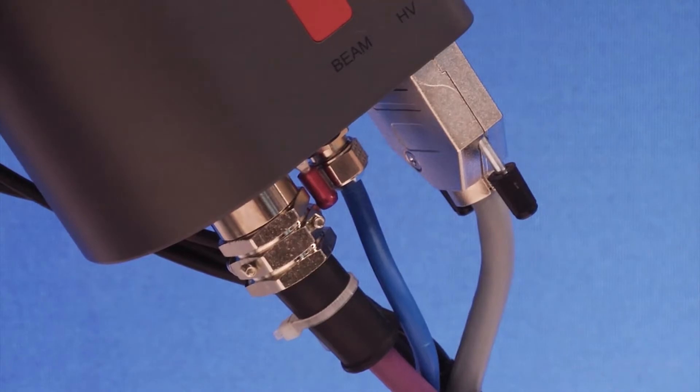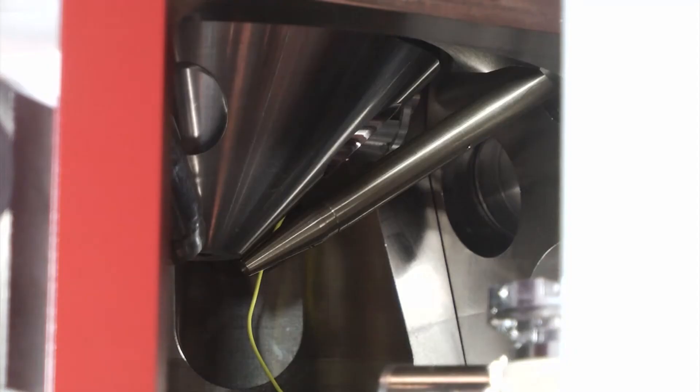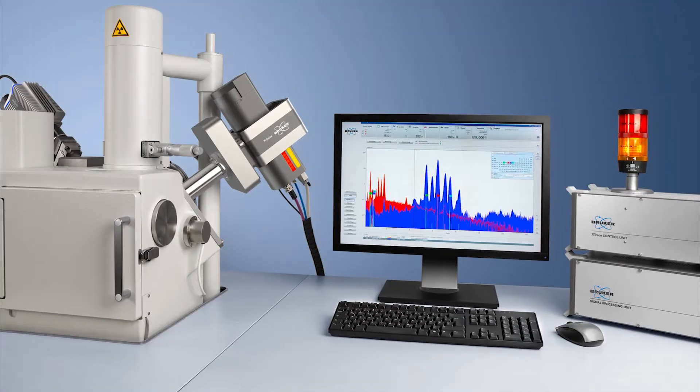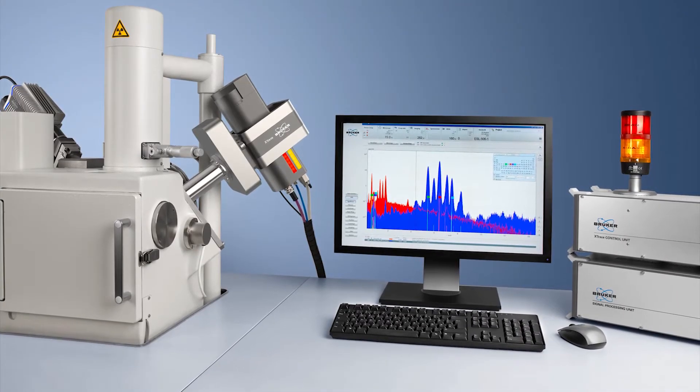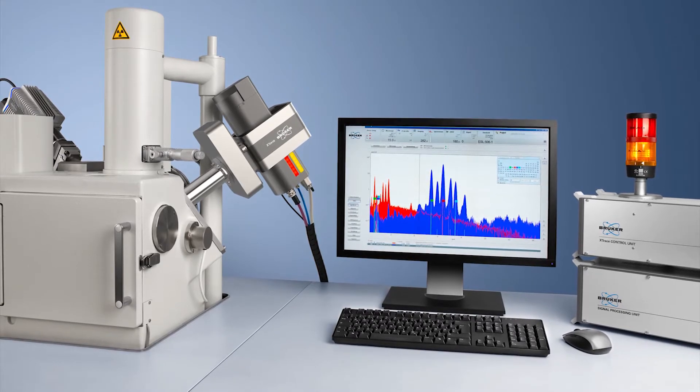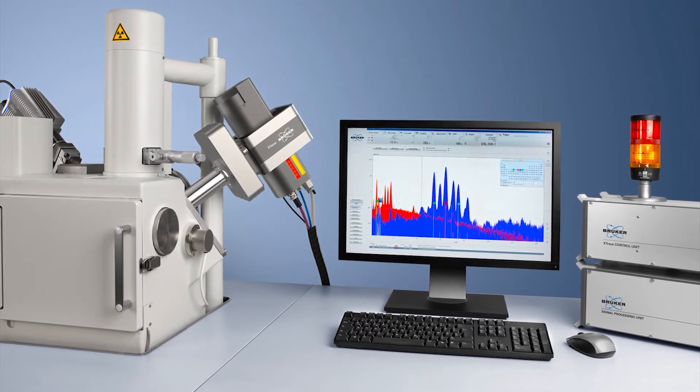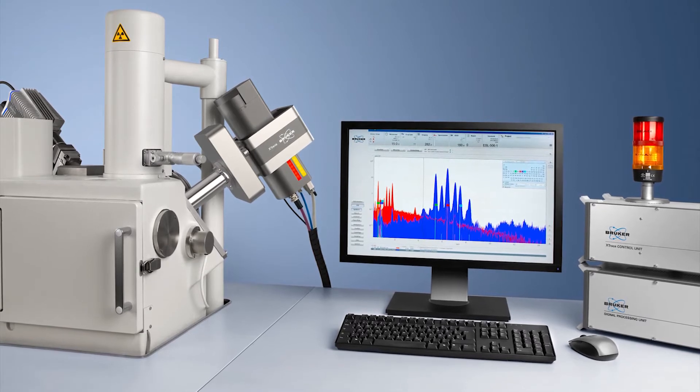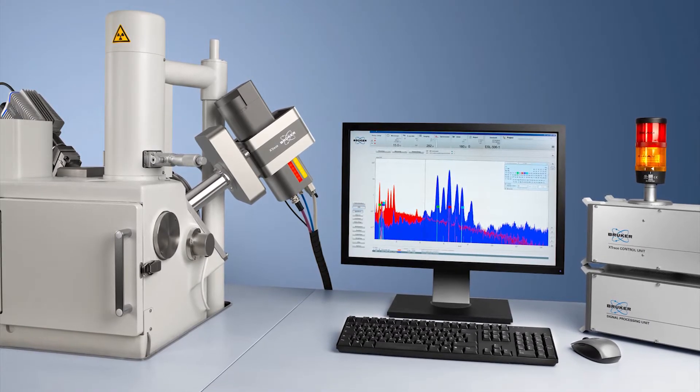Here you see our X-Trace microspot X-ray source on an SEM column. It consists of a micro focus X-ray tube and polycapillary optics. With molybdenum as target material, spot sizes smaller than 40 micrometers can be achieved.